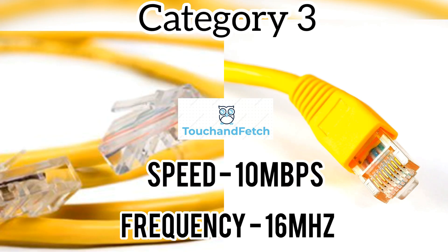The next one is Cat3. Cat3 is called Category 3 cable. Speed: 10 Mbps, frequency: 16 MHz. This cable was used for voice and data communications and is not used nowadays since we have moved to better cables.